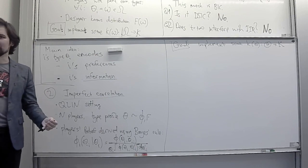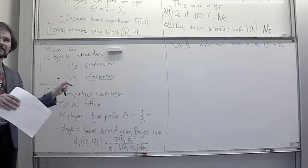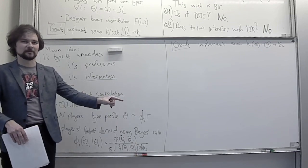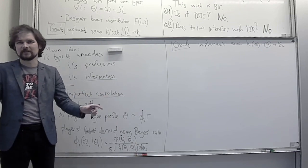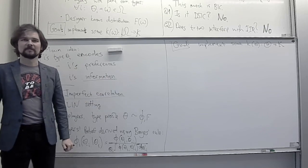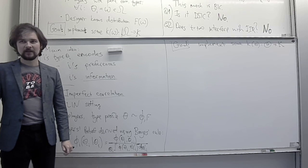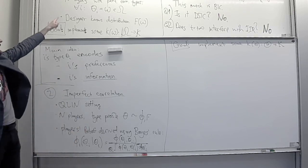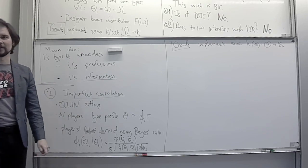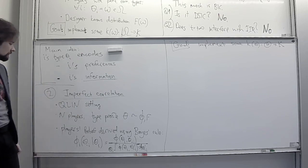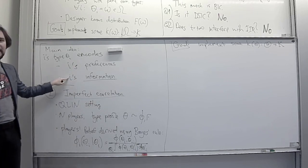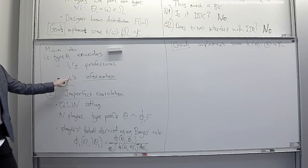Just like with optimal mechanisms, where the jump from monopolistic screening to Myerson's optimal mechanism was very small — we moved from two types to continuous types and then all hell breaks loose — here it is more or less the same. Once we relax perfect correlation to imperfect correlation, you need some heavier artillery to approach this problem, since player i's information about other players' types is no longer unambiguous.